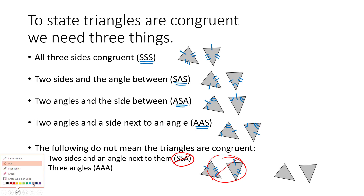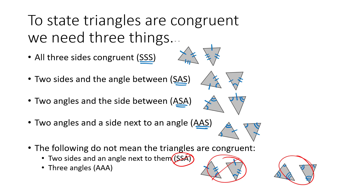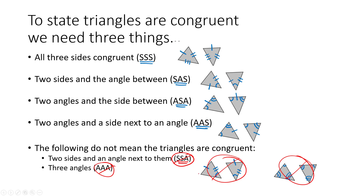The other one that doesn't cause as many problems is when we have three angles congruent — angle-angle-angle. This just means the triangles are similar, but they could be very different sizes. One could be huge and one could be small, so angle-angle-angle is not allowed either. Remember those two do not work, but the other four combinations — SSS, SAS, ASA, and AAS — if we can identify that combination, we can say yes, these triangles are congruent.